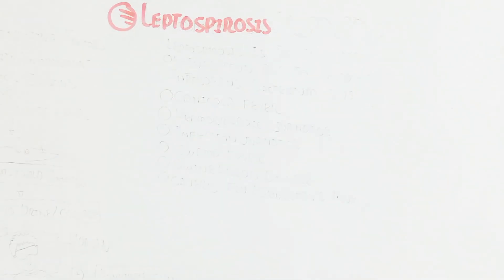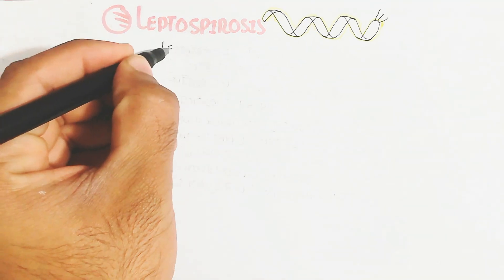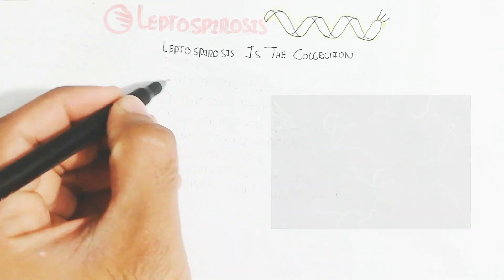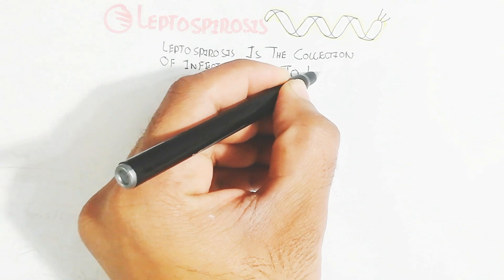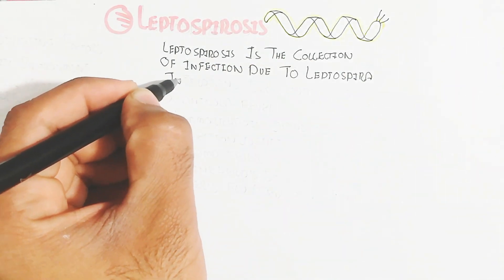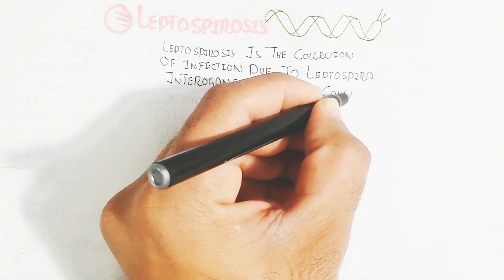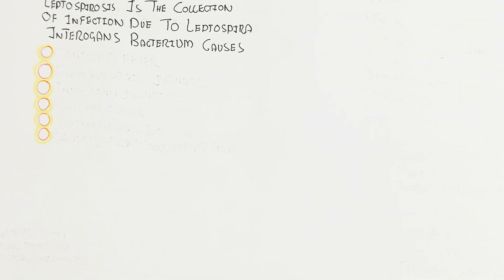In this video we will understand about leptospirosis, the infection due to the bacteria spirochete structure. Here is the microscopic view. Leptospirosis is a collection of infections due to leptospirals. The bacterium causes canicola fever, and we will understand each type — you can understand through pictures.